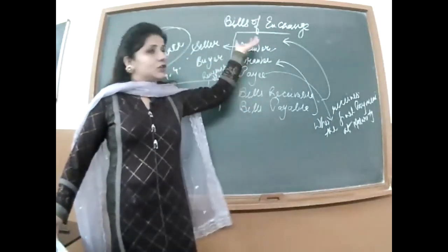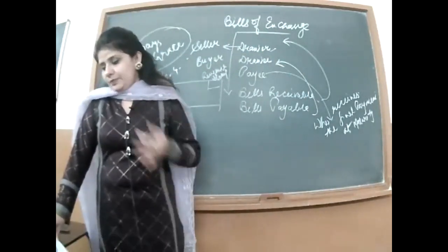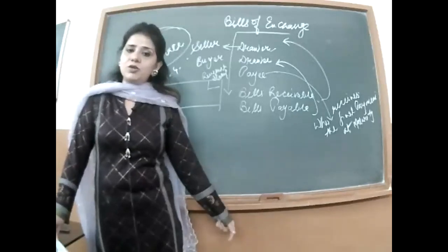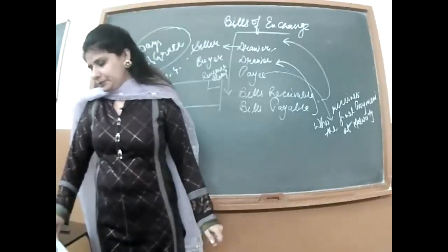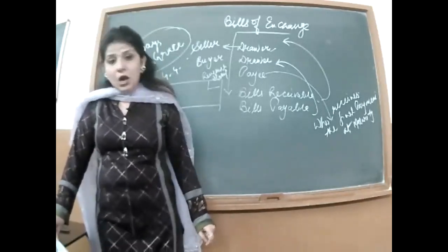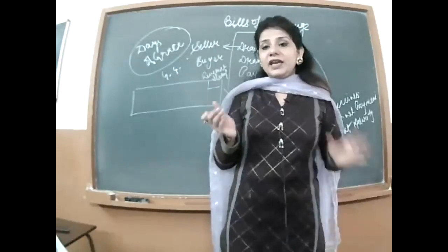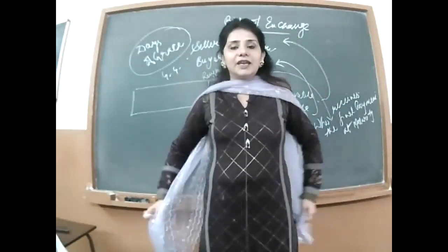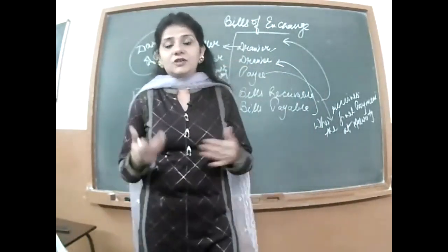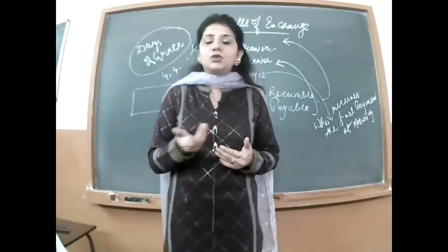A business transaction relating to sale and purchase of goods may either be for cash or on credit. Businessmen may not want to sell on credit, but with a view to counter competition in the market and promote sales, they have to sell on credit. This is because bad debts ho sakte hain, lekin competitors ko beat karne ke liye credit pe bechna padta hai.